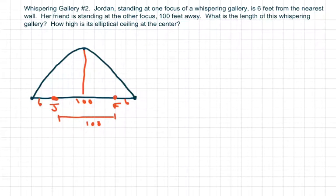Hi everyone, this is another whispering gallery problem. We have Jordan standing at one focus of a whispering gallery, and she is six feet from the wall. Her friend is 100 feet away, and therefore she's going to be six feet from the wall as well. So we want to know